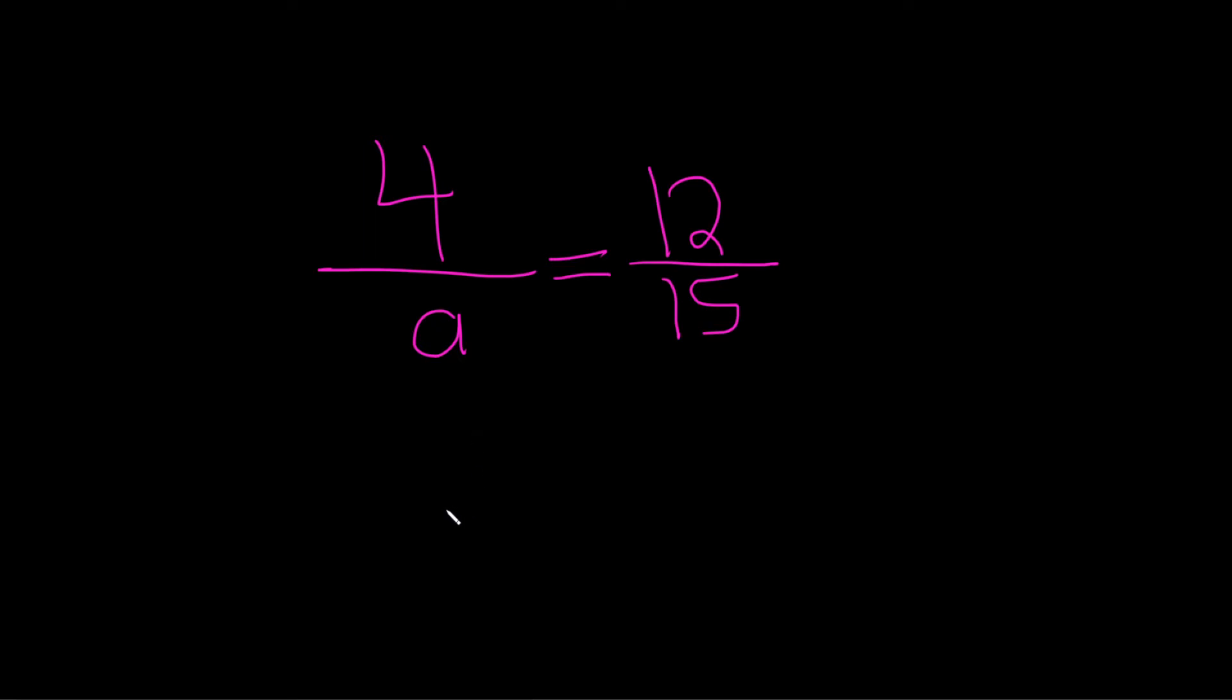So to do this, we can simplify first, or we can just go ahead and do it. Let's just go ahead and do it. So we'll use a method called cross-multiplication.